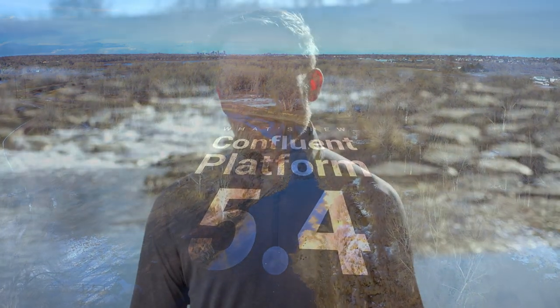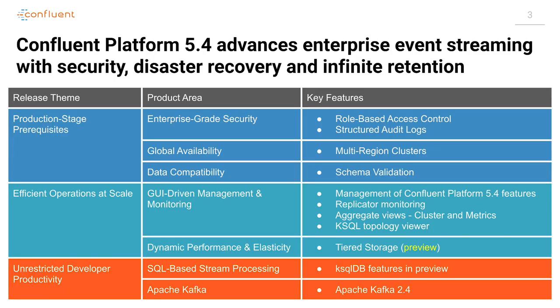The features I want to tell you about fit neatly into three bins. There are the production stage prerequisites — things you're just going to need when going to production. There are things associated with operating Kafka after it's in production, what you need to stay on top of that cluster. And then there are the core developer productivity tools, things you need through the whole development process.